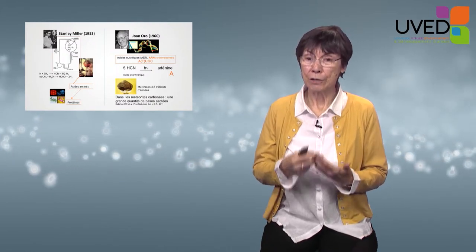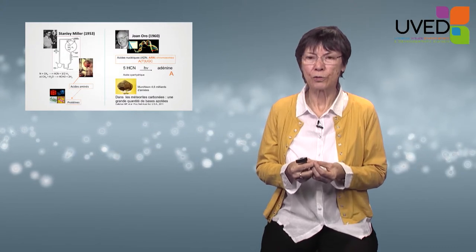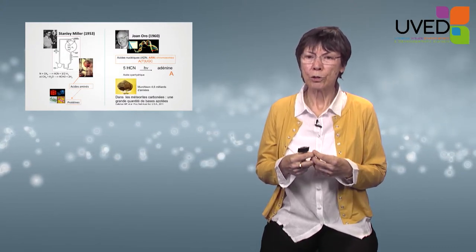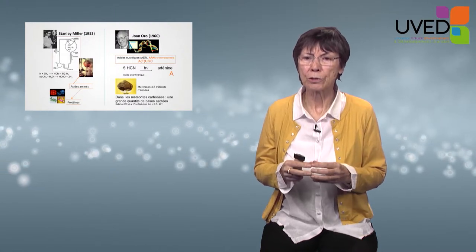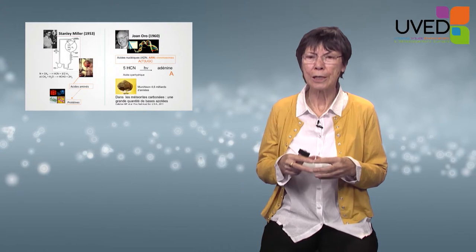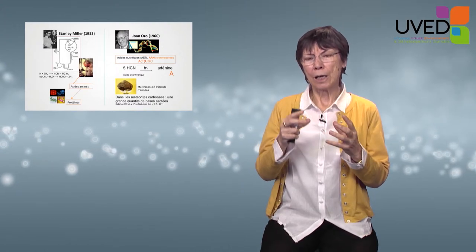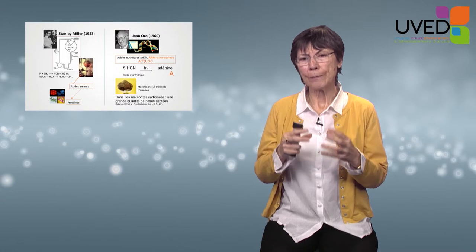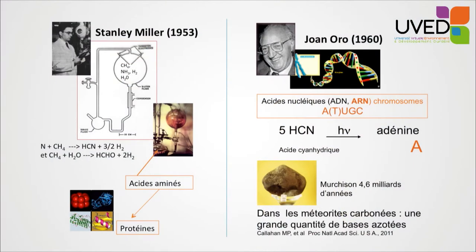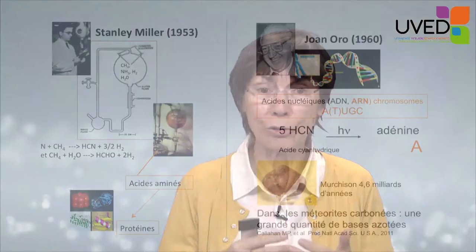Wanting to understand the primitive atmosphere, Stanley Miller reconstituted it in Harold Urey's laboratory — Urey had won the Nobel Prize for the discovery of deuterium, a hydrogen isotope. Miller built a machine and in the upper balloon placed methane (CH4), ammonia (NH3), hydrogen (H2), and water (H2O), which he then submitted to electrical discharges. After some time, he observed five amino acids, similar to or identical to amino acids found in living cells.